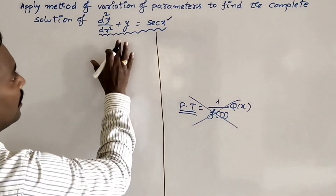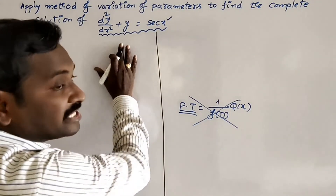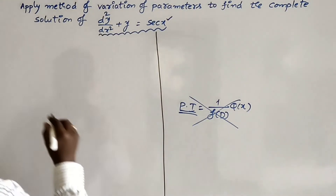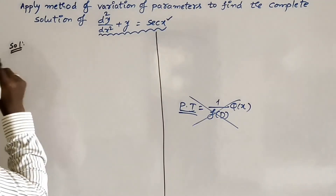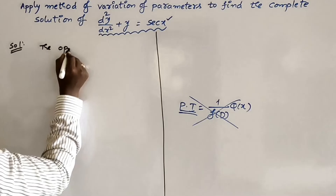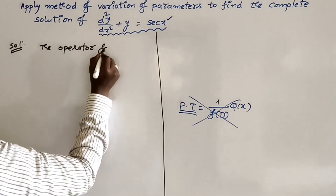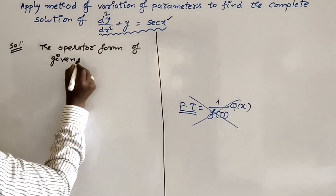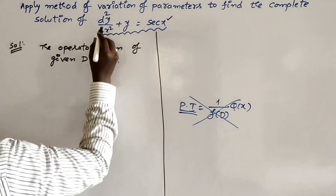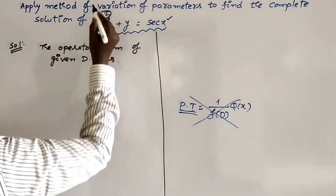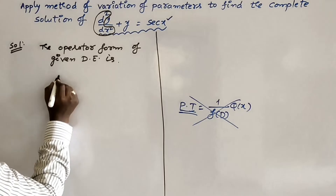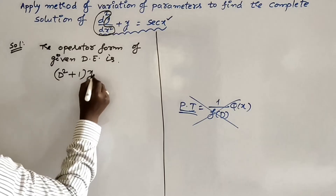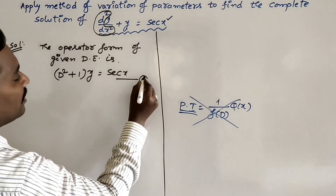First of all, we have to write the given differential equation in operator form. After that, we find the complementary function as usual. The operator form is: d²/dx² is replaced by D², so (D² + 1)y = sec(x). Take this as equation number 1.